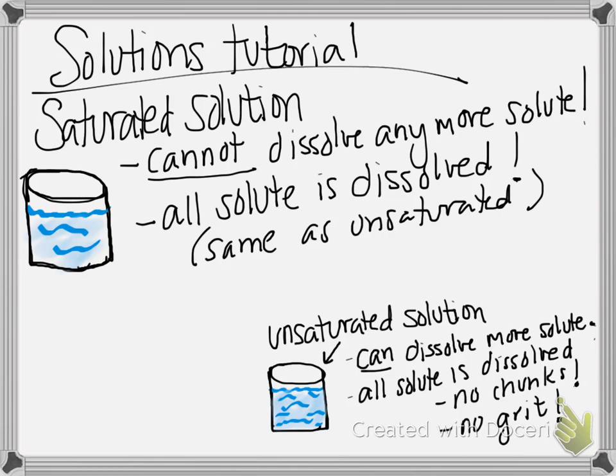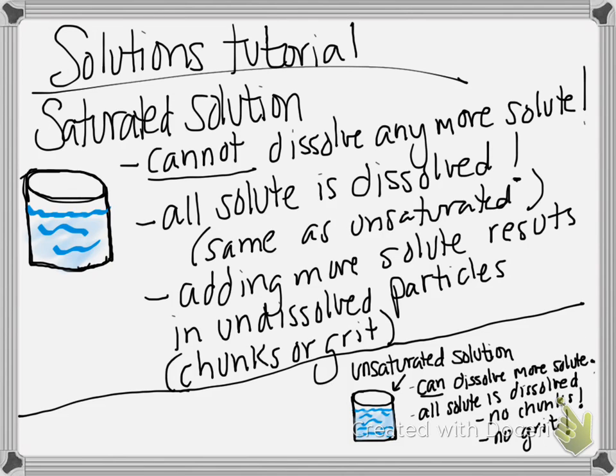Where the saturated solution is going to look different is when we add more solute to it. If we add more solute to a saturated solution, this will result in undissolved particles. In other words, we'll have chunks in the solution or grit at the bottom. That's where a saturated solution begins to look different from an unsaturated solution.